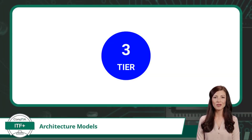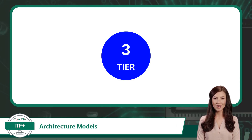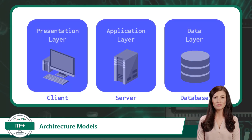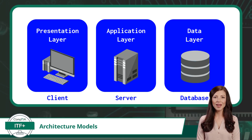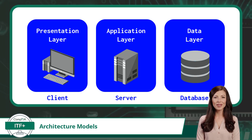Let's break down our two-tier architecture into a three-tier architecture. In a three-tier architecture, all three application architecture layers are broken into separate components. We will again have a client and a server, but the data layer will now be handled by a distinct database component. The presentation layer is handled by the client, the application layer by the application server, and the data layer by a separate database server. This model allows for better scalability, as each layer can be managed separately, making it easier to add or modify components without affecting the others.